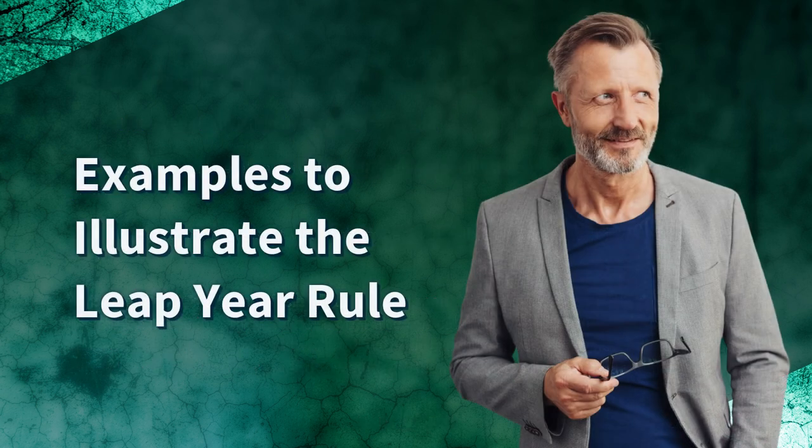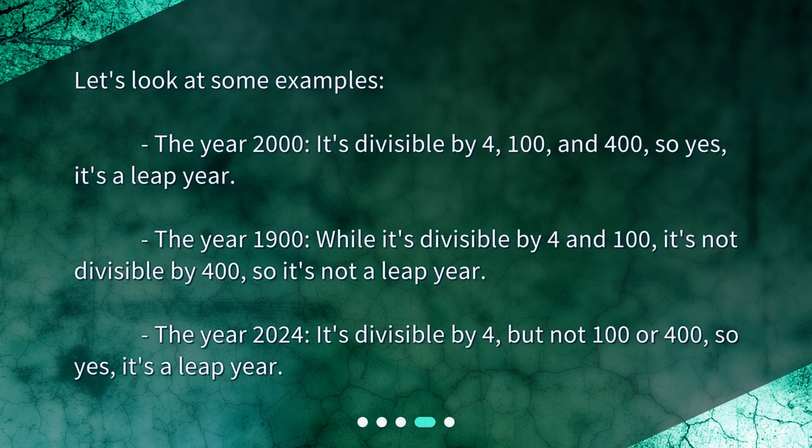Let's look at some examples. The year 2000: it's divisible by 4, 100, and 400, so yes, it's a leap year.